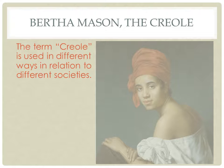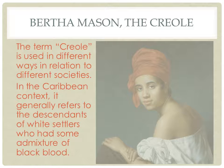The word 'Creole' is vague and used differently in different societies, but in the Caribbean context it refers to descendants of white settlers who had some admixture of black blood. Sometimes it refers more to a language — many Creoles are French-speaking because early settlers were French and mixed more with local populations. But in this Caribbean context it usually means racially mixed with black ancestry.